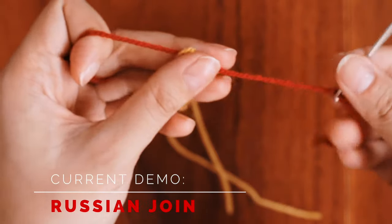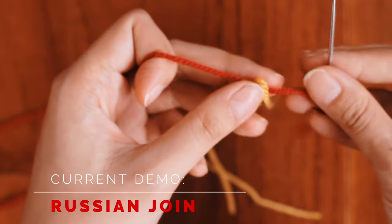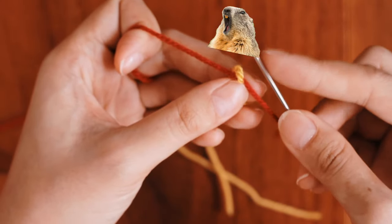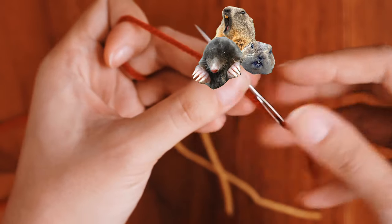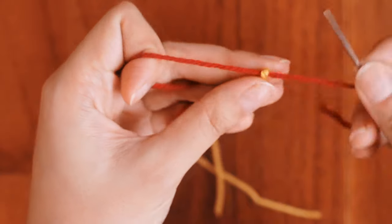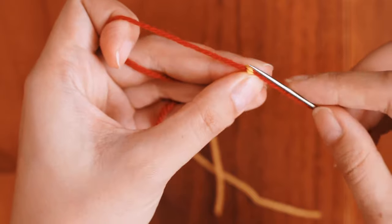I've threaded up my red yarn here, and now we're going to start burrowing. So imagine that your tapestry needle is like a gopher, woodchuck, mole hybrid. It's just a master burrower, and it's going to burrow into this strand of yarn.